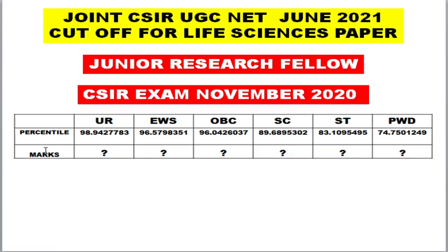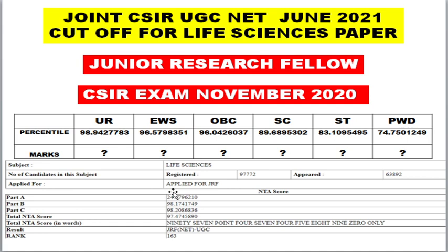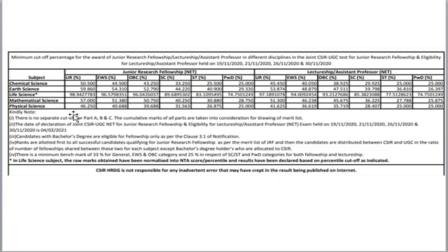NTA will mask your actual marks. Even on my own scorecard, you will only see the NTA score — for Part A, Part B, and Part C, you'll get a separate NTA score. For example, I may have scored only 50 or 60 out of 100, but the NTA score shown could be 98.2. You cannot calculate your actual mark from your percentile score because percentile is a relative measure, not an absolute one. There is no formula to convert it back to raw marks.